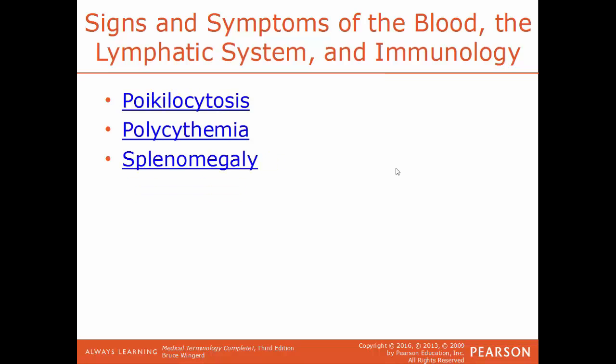Macrocytosis is a condition where red blood cells are much larger than they should be — there's a standard size for a typical red blood cell, and when they get larger, there's usually a reason. Poikilocytosis is a condition where you have abnormally sized red blood cells in the blood, typically used when 10% or more of red blood cells are abnormally shaped. Polycythemia refers to an abnormal increase in the amount of hemoglobin in the blood, caused either by a reduction of plasma or a large increase in the number of red blood cells.